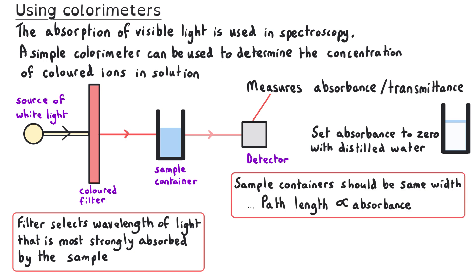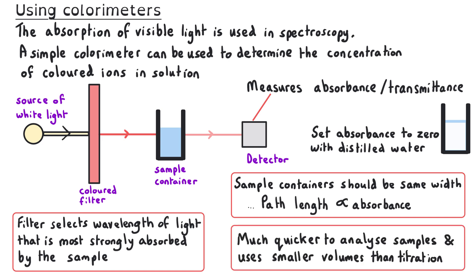It is important to make sure that the sample containers are always the same width, because the path length the light travels through is directly proportional to the absorbance — in other words, a wider container would absorb more light. This process is much quicker to analyse samples than titrations, and it enables us to use a much smaller volume of sample; in fact, we can reuse the sample after it has been analysed.